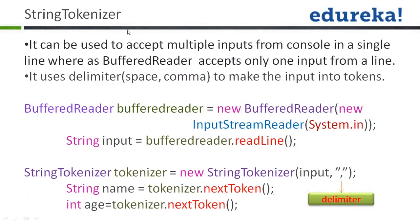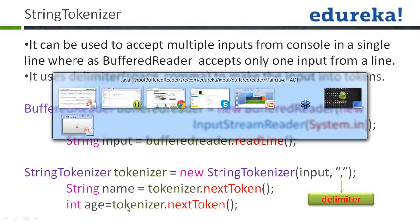Now we come to StringTokenizer, the second class for taking input. It can be used to accept multiple inputs from the console in a single line, whereas BufferedReader accepts only one input per line. You can pass many inputs using a delimiter such as a comma. To use it, create a BufferedReader to take the entire line, then define a StringTokenizer object, pass the string and the delimiter (comma). Wherever it finds a comma, it treats that as the boundary between tokens.